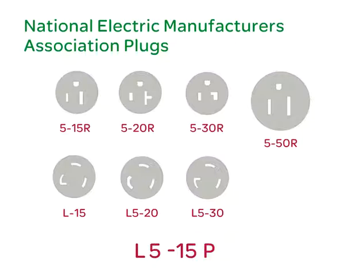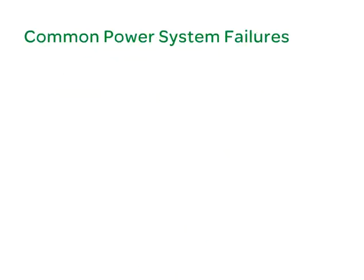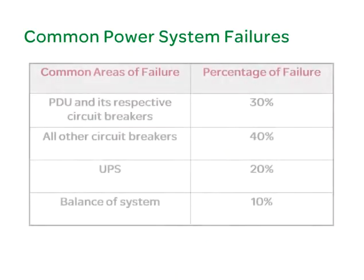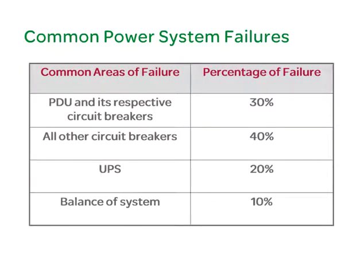Now that we have learned about plugs and receptacles, let's explore some of the common areas where power failures can occur. According to mTechnology, Inc., an expert in the field of probabilistic risk assessment, the most common areas of power system failure in data center electrical infrastructure are: the power distribution unit and its respective circuit breakers at 30%, all other circuit breakers at 40%, UPS failure at 20%, and balance of the system at 10%.